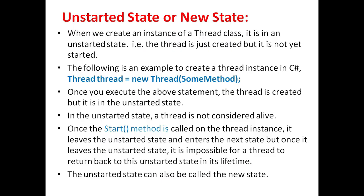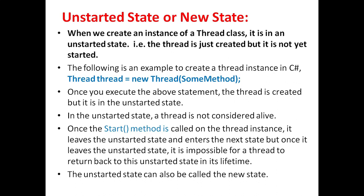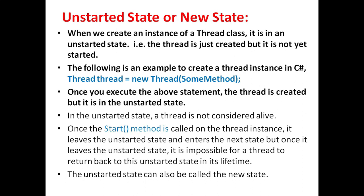First we will see unstarted state or new state. When we create an instance of a thread class, it is in unstarted state — that is, the thread is just created but it is not yet started. The following is an example to create a thread instance in C#: Thread objectName = new Thread(methodName). Once you execute the above statement, the thread is created but it is in unstarted state.